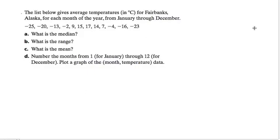Okay, so in this problem we're dealing with median, range, mean, and we're dealing with negative numbers. So let's see what we have here. It says the list below gives average temperatures in Celsius for Fairbanks, Alaska, for each month of the year from January through December. So that means that each of these temperatures is an average for a month.